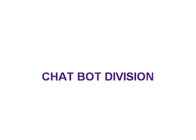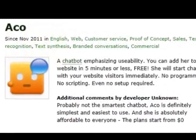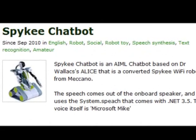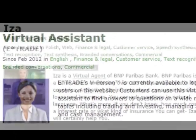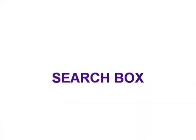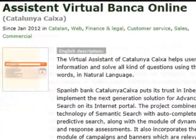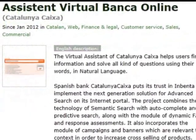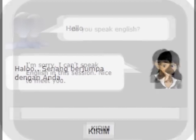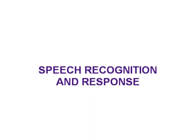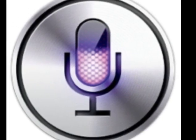Chatbots are often divided by their appearance, perception, and expressions. So there are faceless chatbots, robots, avatars and animated avatars, and several search box interfaces. Some can recognize text, while others can recognize speech and respond with speech.